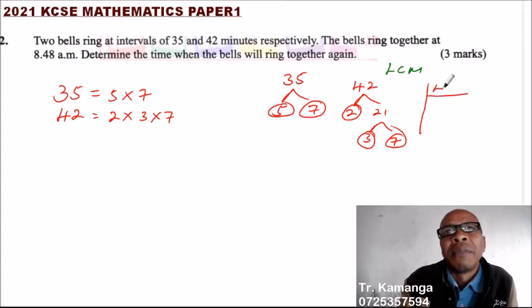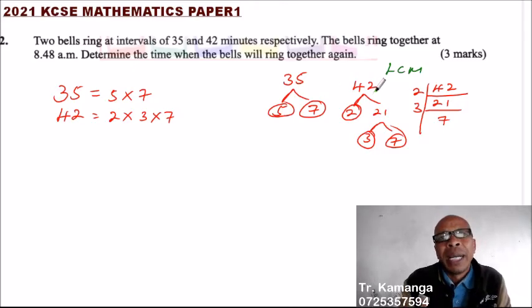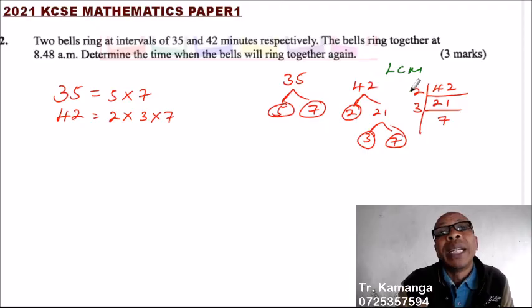You can also use this method. You can say 42 by 2, it is 21. By 3, you get 7. Any of this you are comfortable. I am talking of when you are given a big number which you cannot be able to get the factors off head.